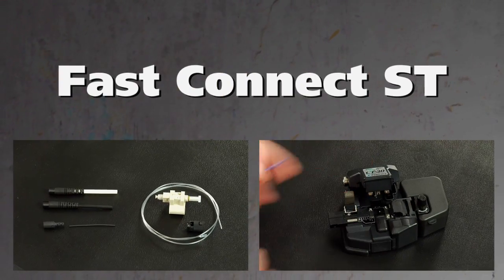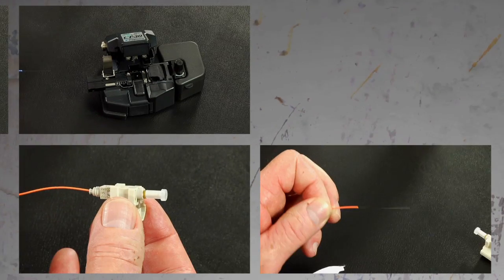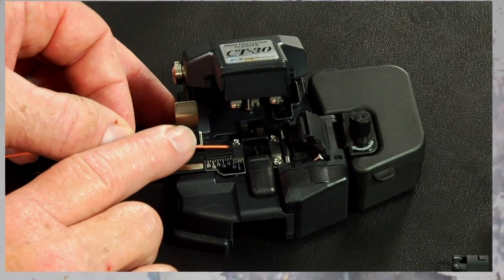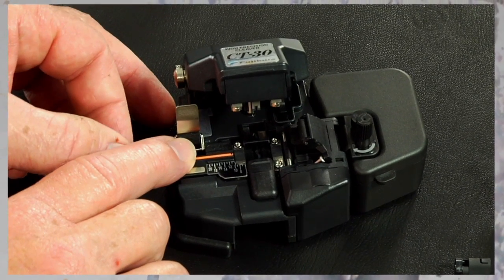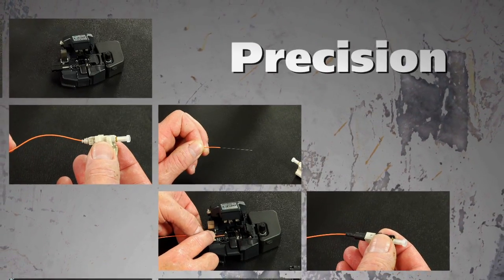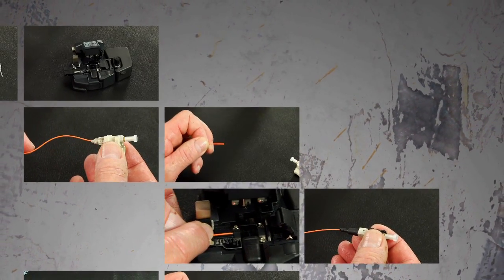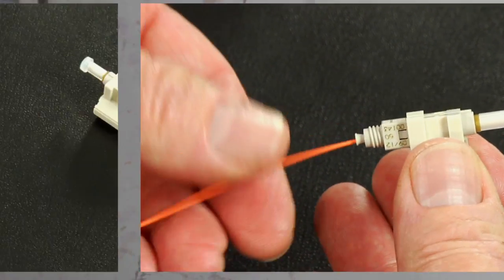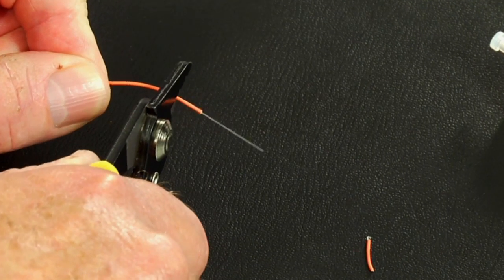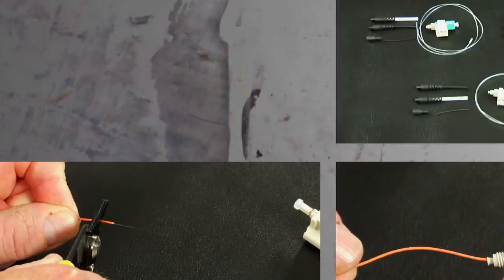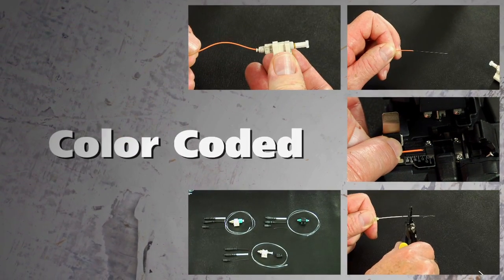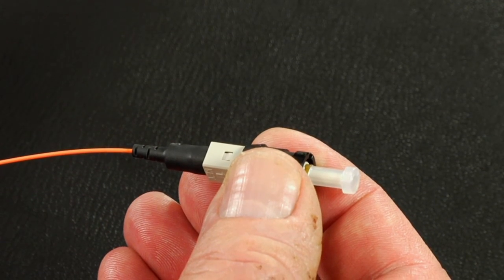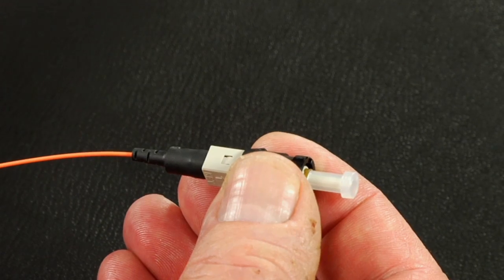Fast connectors. AFL's fast connectors are pre-polished field installable connectors that eliminate the need for hand polishing in the field. Precision mechanical alignment ensures low loss with a proprietary gel. Fast connectors provide immediate termination to both single mode or multi-mode fibers and are color-coded for ease of fiber identification. This video will guide the user through the steps required to properly terminate the fast ST connectors.